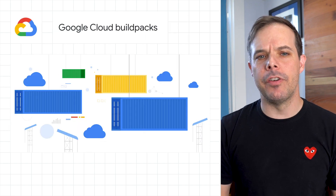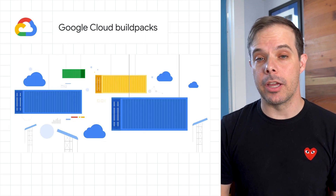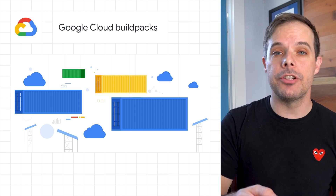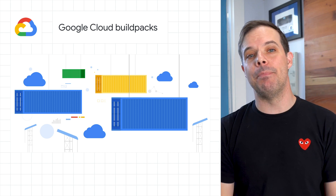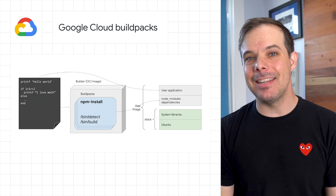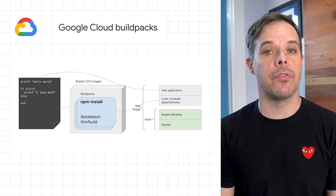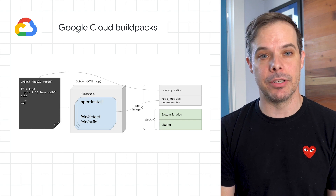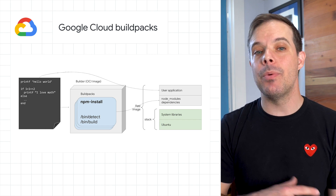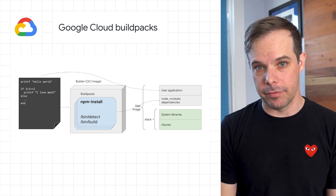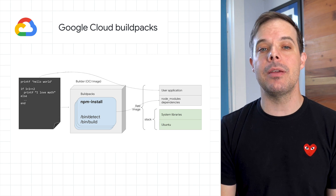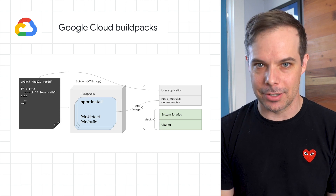Because you want to focus on writing code, not containerizing it, we've launched Google Cloud Build Packs. They make it fast and easy for you to create secure, production-ready container images from source code and without a Dockerfile. Head on over to the post for details on how to use them and links to get started.